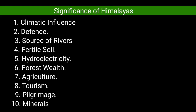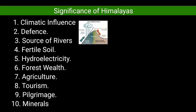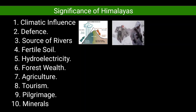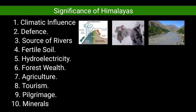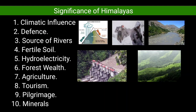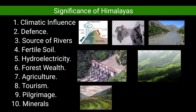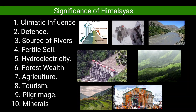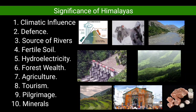The Himalayas have great significance for our country. They have a major climatic influence and serve as a defensive barrier. They are the source of many snow-fed rivers like the Ganga, Yamuna, and Tista, and also a source of fertile soil. The presence of many rivers enables electricity generation. The coniferous and evergreen forests provide vast forest resources. The region is also good for agriculture, and the hill stations support tourism and pilgrimage. The Himalayas are also a storehouse of minerals, with vast significance for the social, political, and economic aspects of the country.